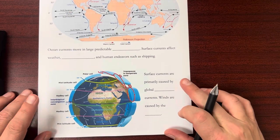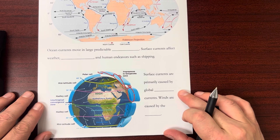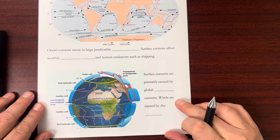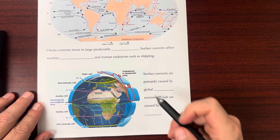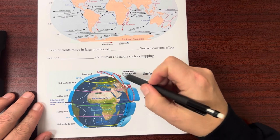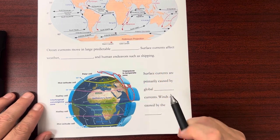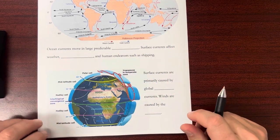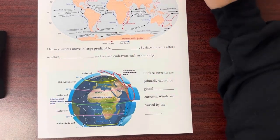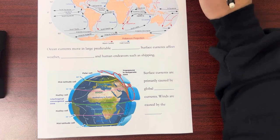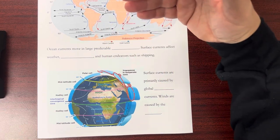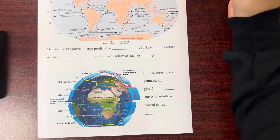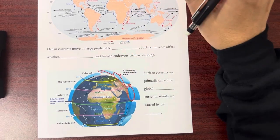So surface currents are primarily caused by global wind currents. So we have these huge masses of air that blow in regular directions and those wind currents will actually push the water. It's just like if you're blowing on the surface of a bowl of soup or a cup of coffee. That's what the wind currents are doing. They're blowing across the surface of the ocean and pushing that water.